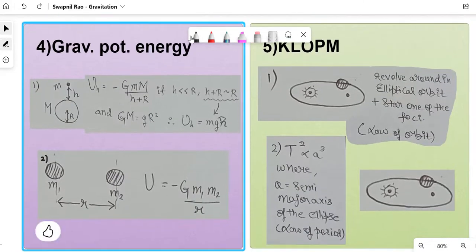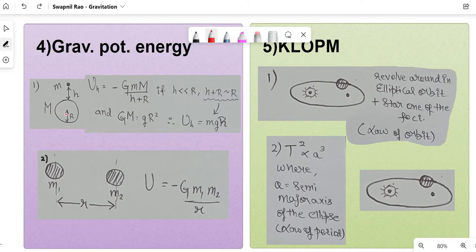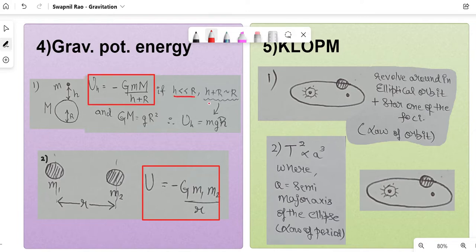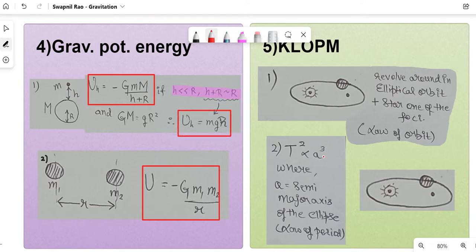Gravitational potential energy has two cases. The general formula for two bodies of masses m1 and m2 separated by distance r is U = −G·m1·m2 / r. For a body at height h above the surface of a planet of mass M and radius R, r becomes (R + h), so U_h = −G·M·m / (R + h). Special case: when h << R, then (R + h) ≈ R, and the formula simplifies to U = m·g·R (approximately mgh for small h). You cannot apply this approximation every single time.